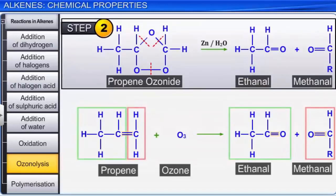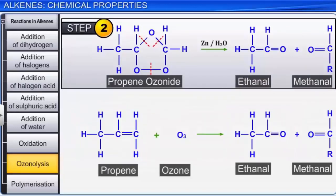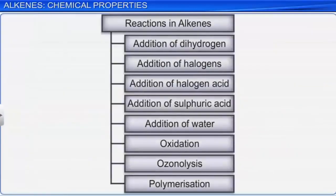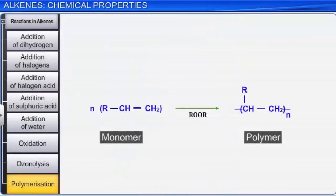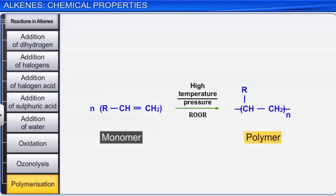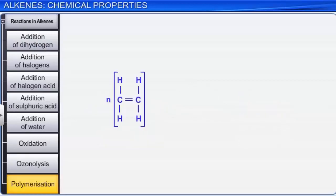Let us move on to the last reaction — polymerization. Alkenes undergo addition polymerization reaction when heated under pressure in the presence of suitable catalysts. In this, a large number of molecules of the same species join together to form a giant molecule called a polymer. The simple compound which forms the polymers is called a monomer. For example, ethene when heated to 1000°C under 1000 atmospheric pressure undergoes polymerization to form polythene.